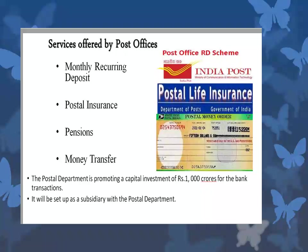Post offices continue to render services in the banking area by offering: monthly recurring deposits (RDs), where people deposit a fixed amount monthly — from as little as 500 rupees — and after one year receive the amount back along with interest. The second service is Postal Insurance. The third is Pensions. And the fourth is Money Transfer, which may be in the form of postal money orders.